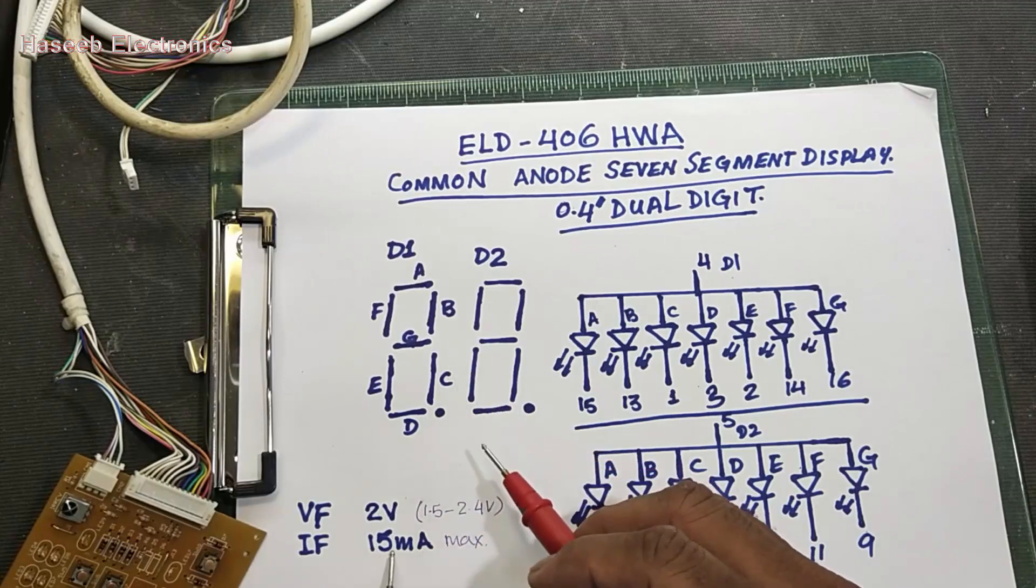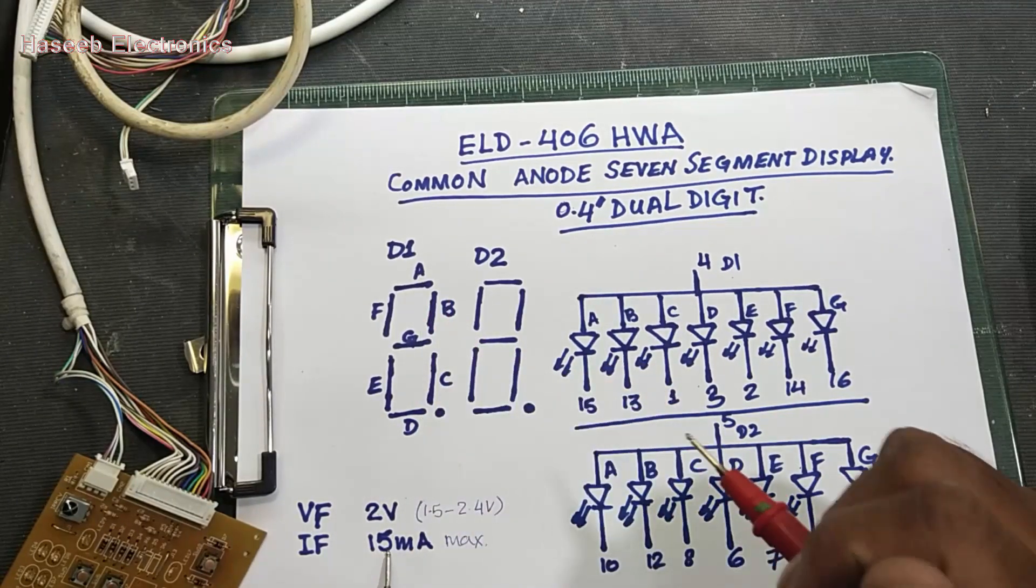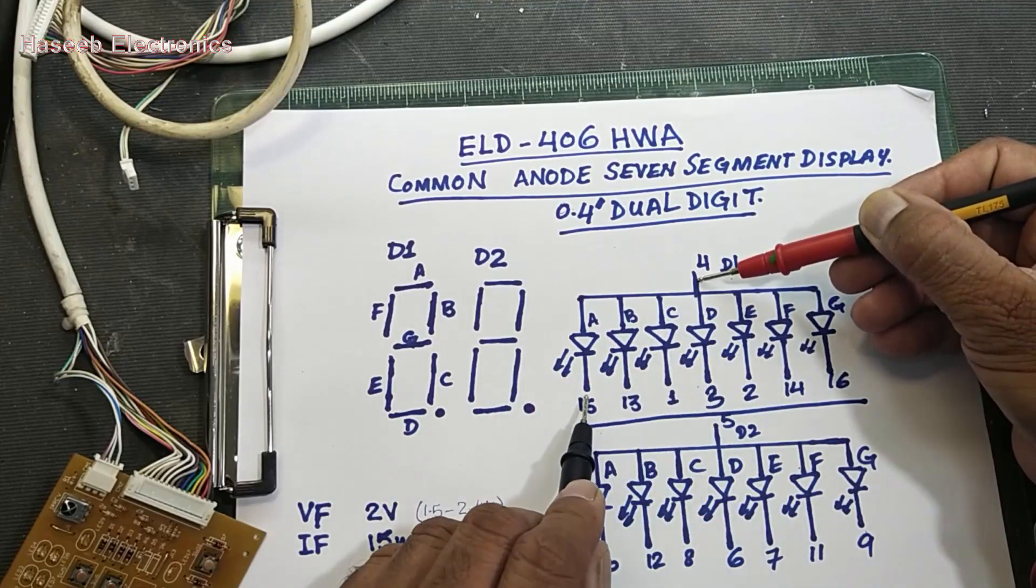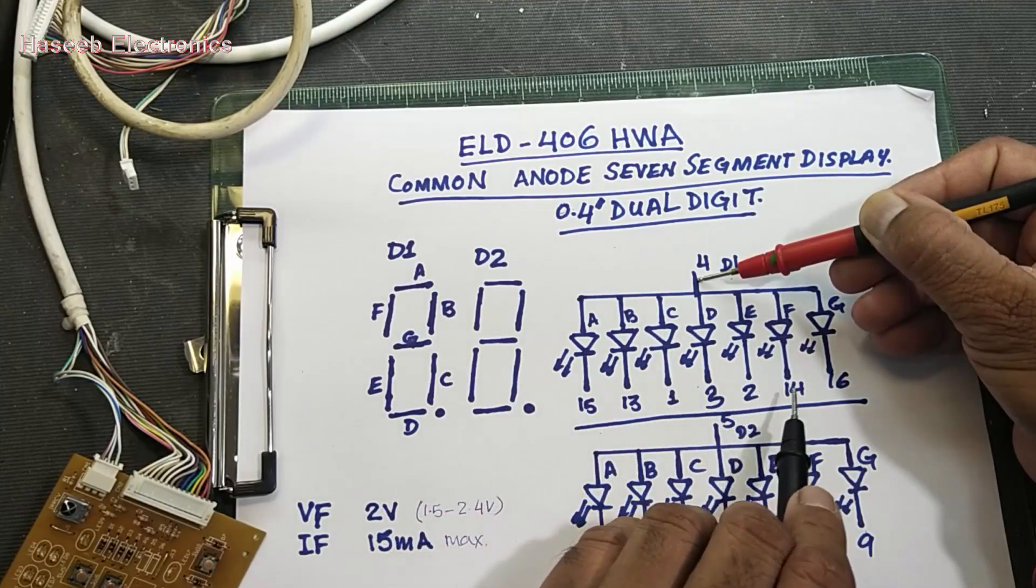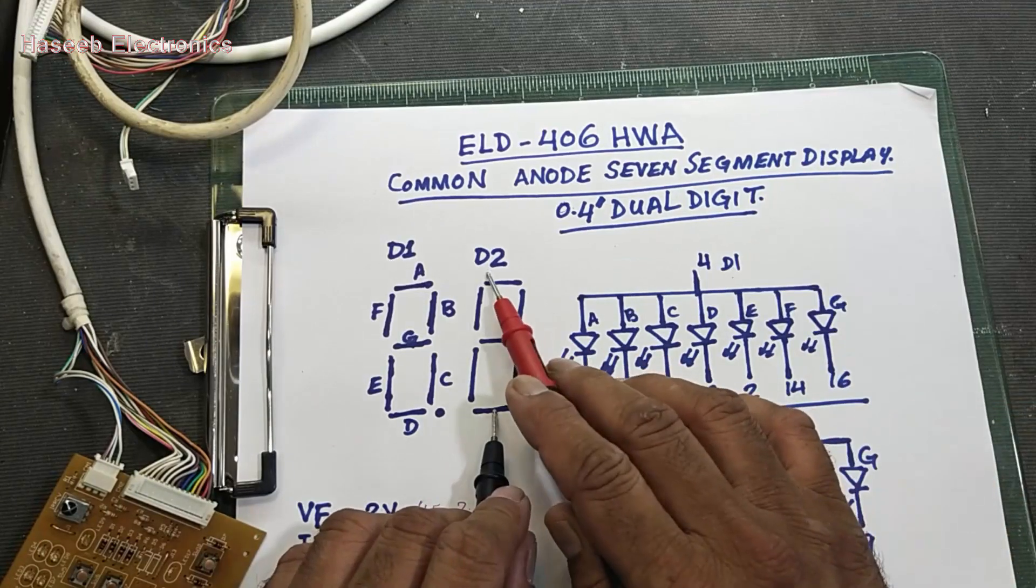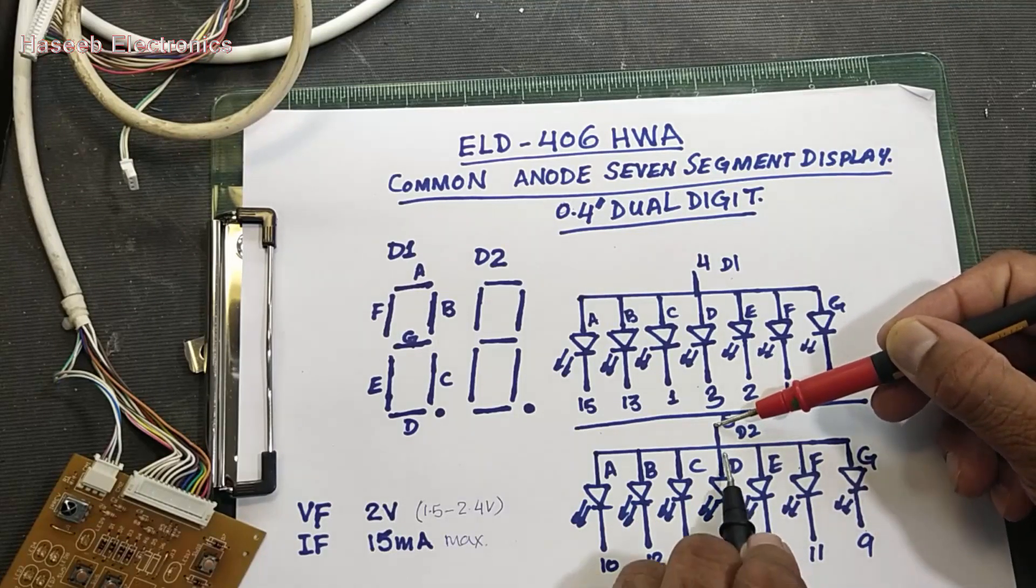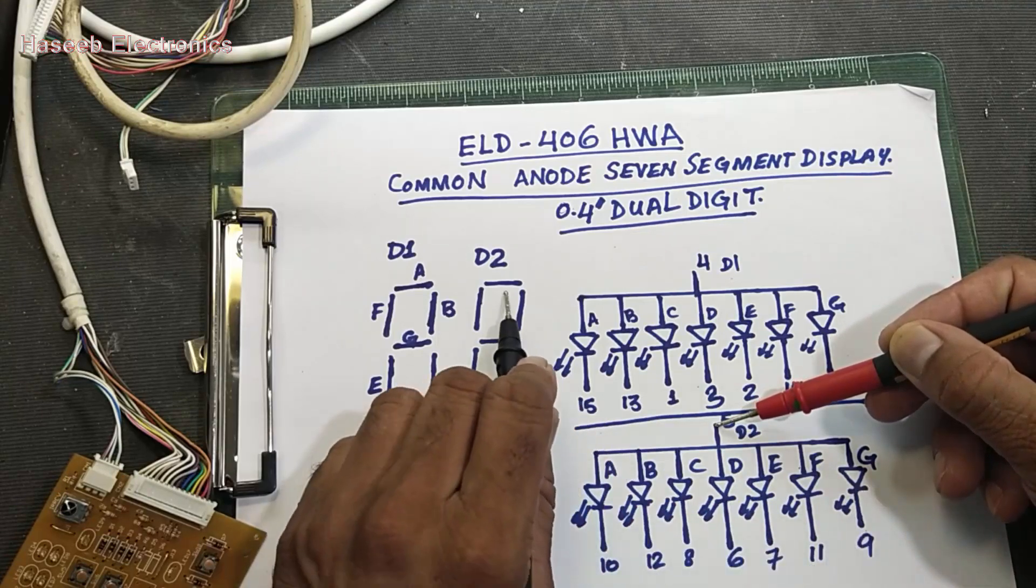15, 13, 1, 3, 2, 14, 16 for D1. D2, pin number 5 is common: 10, 12, 8, 6, 7, 11, 9. So if 9 and 5, segment 2G will turn on.